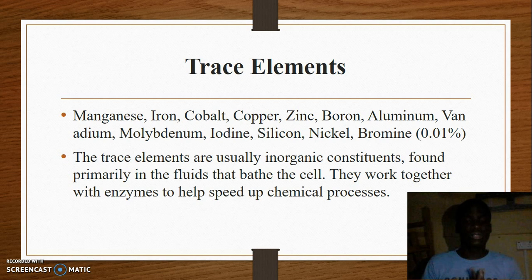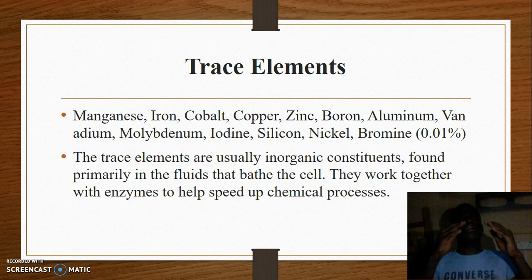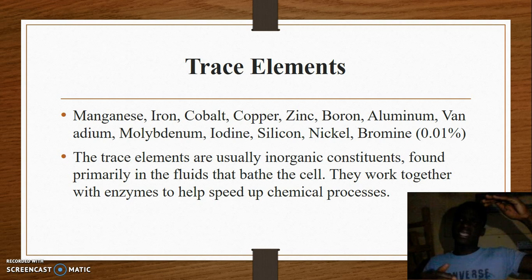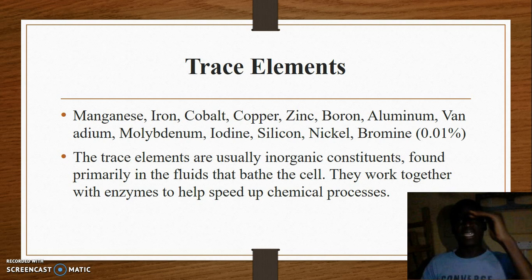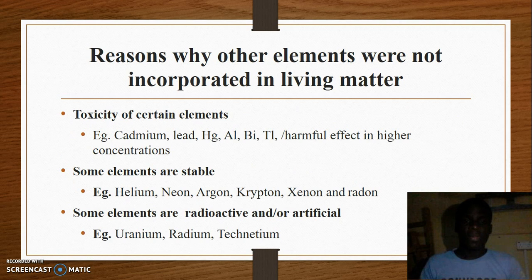Trace elements are usually inorganic constituents found in fluids that surround or bathe the cell. Most of them are cofactors or act as catalysts to speed up chemical reactions. Being found around the cell membrane puts them in a strategic position to speed up chemical reactions that occur at the cell membrane level.